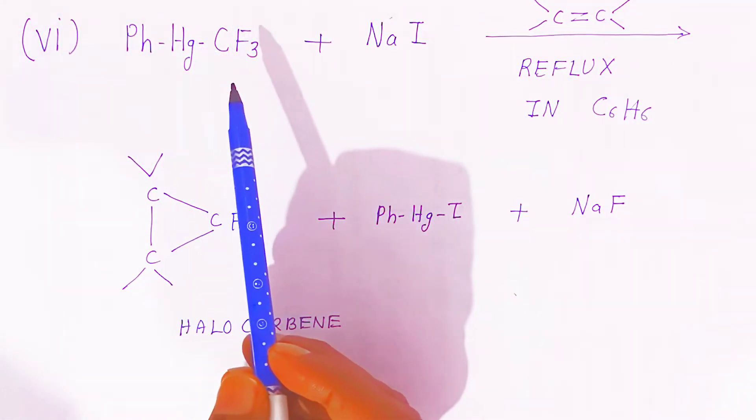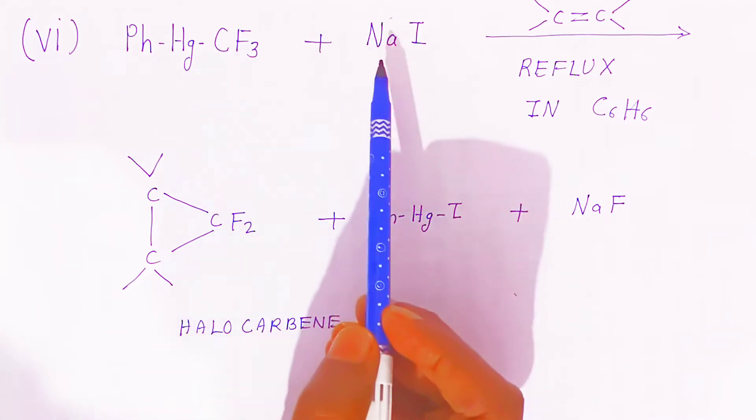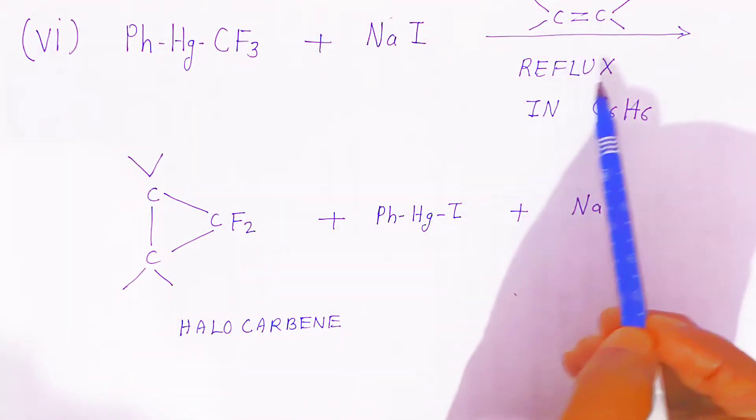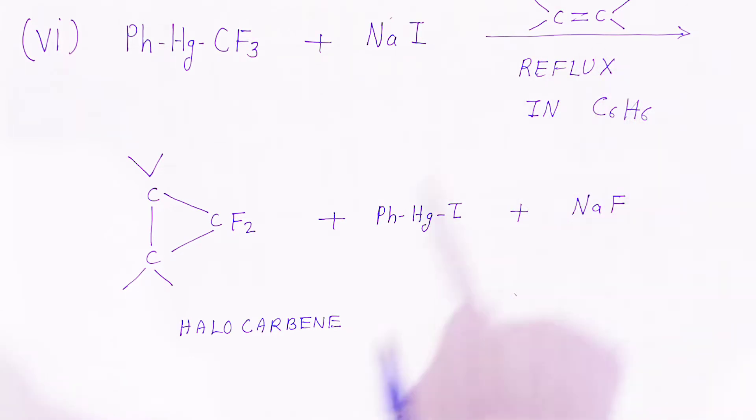This is the organomercury compound. It reacts with sodium iodide in the presence of olefins, that is carbon-carbon double bonds. When you reflux in the presence of benzene, you are getting halocarbenes and this type of byproduct.